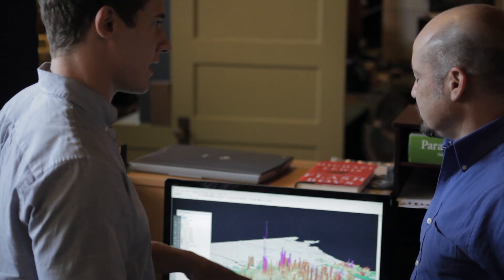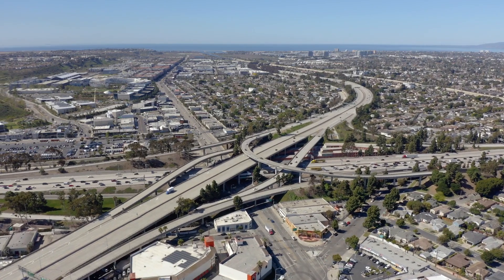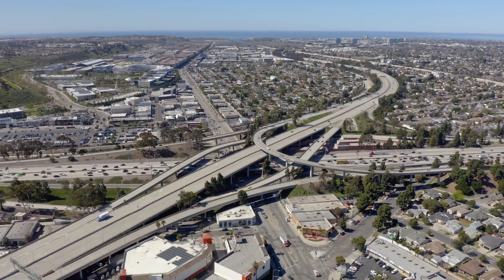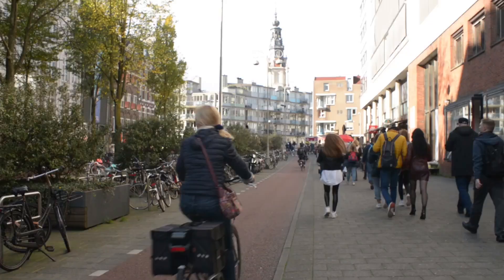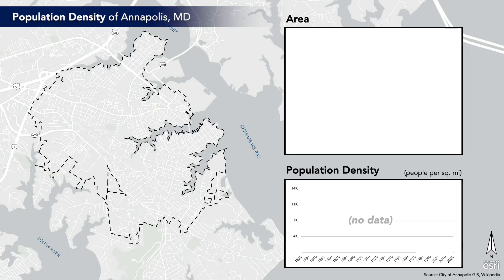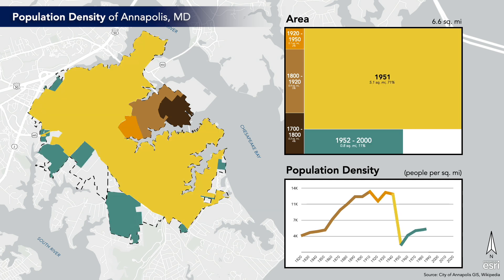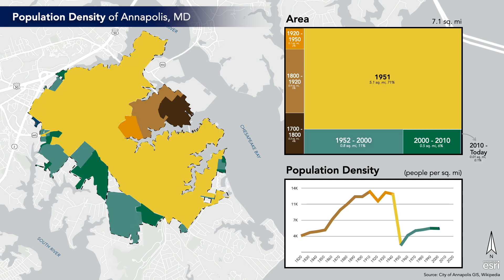When we look at the data, we see that cities are choosing development patterns that are financially unsustainable. That's why Urban3 shows communities the value of good community design by visualizing the economic consequences of land use decisions in a way that a sixth grader could understand. We don't tell people what to do — if they want to continue to develop in a certain way, that's up to them, but they should understand the cost and consequences of long-term decisions.